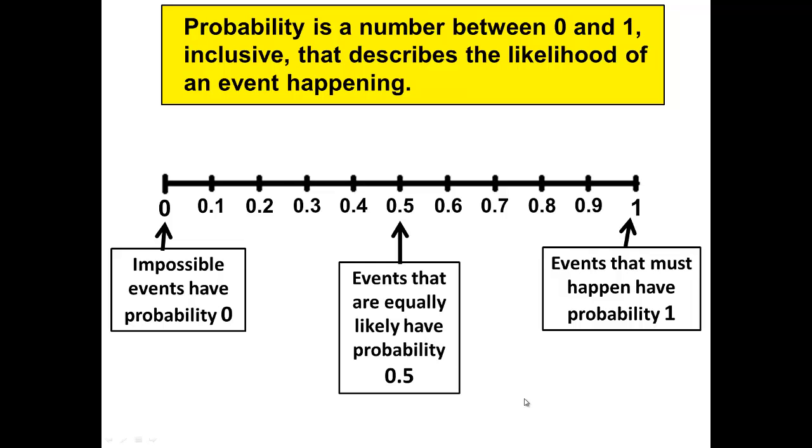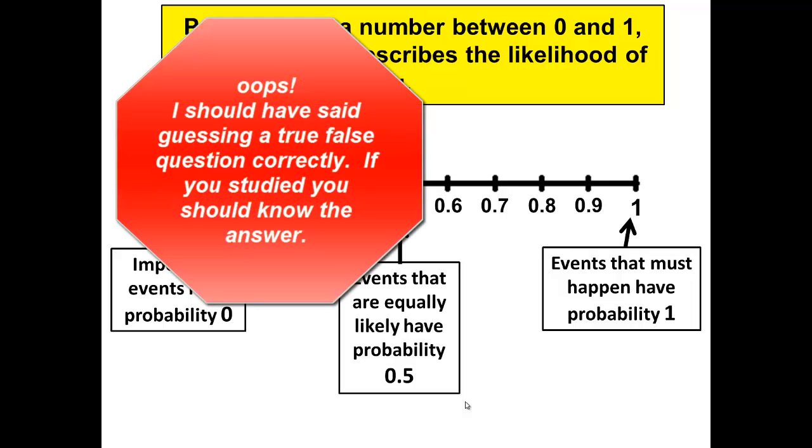Events that are equally likely have a probability of 0.5 or one-half. That would be like flipping a coin and getting a head, or flipping a coin and getting a tail. They're equally likely to happen. That would be like the probability when having a baby of having a boy, or vice versa of having a girl. That would be the probability of answering a true false question correctly.